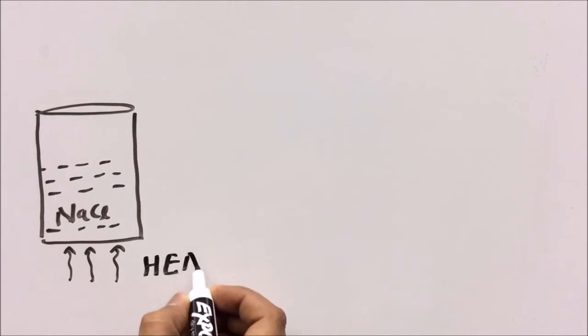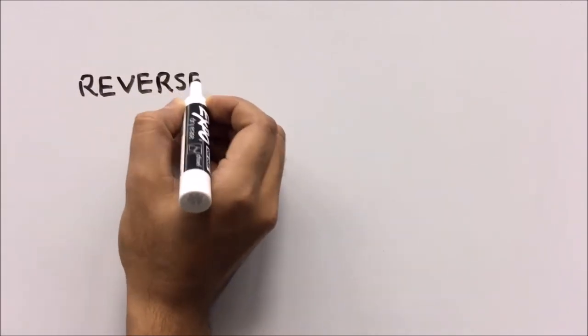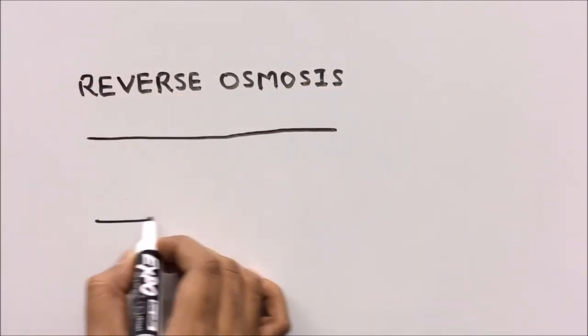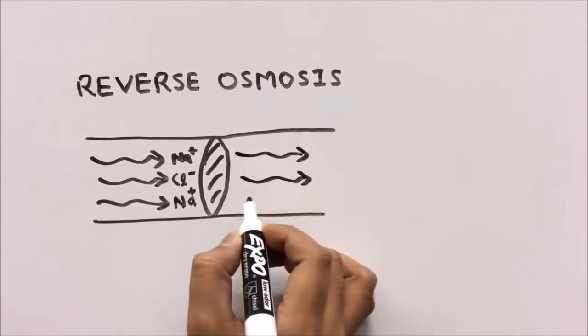In the first approach, heat is used to evaporate the water and collect the vapor in a separate vessel for later use. Secondly, as we all experience in our day-to-day life, reverse osmosis uses a semi-permeable membrane and pressurizes water through it, leaving ions behind.